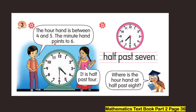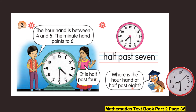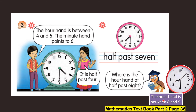Okay class, look at this. The hour hand is between four and five, and the minute hand points to six. It is half past four. Next, the hour hand is between seven and eight and the minute hand points to six, so the time is half past seven. For half past eight, the hour hand is between eight and nine and the minute hand points to number six.